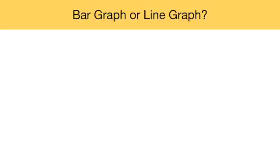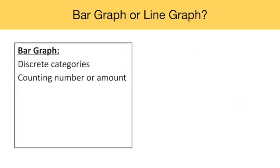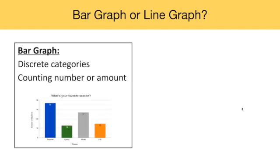One last thing might be that you're wondering how students will know to make a bar graph or a line graph. A bar graph is typically used for discrete categories, so when we're counting the number of different things or an amount of a certain thing. Here's an example graph I made earlier this school year with my students when I asked them what their favorite season is. So each season is its own discrete category, and I counted the number of students who voted for each season.